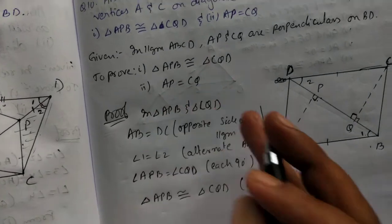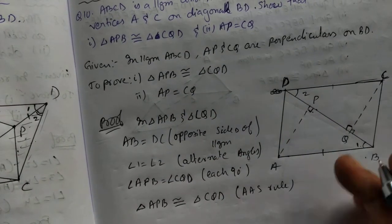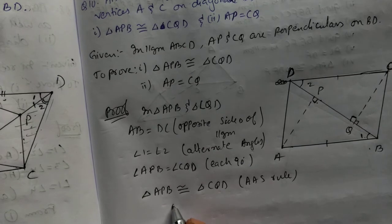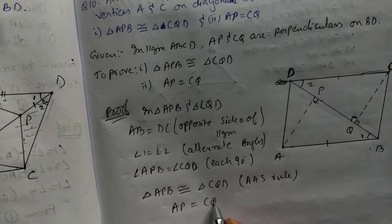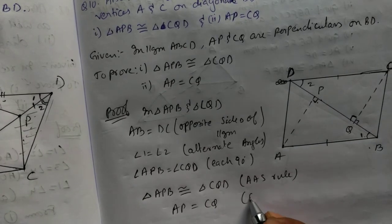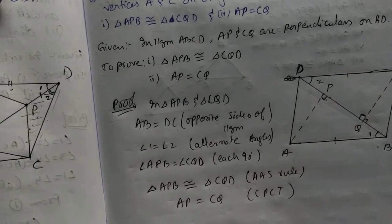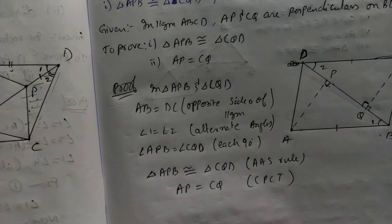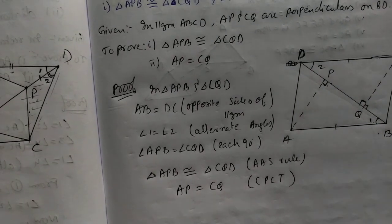If the triangle is congruent, automatically these two will be same. AP equal to CQ. Reason is CPCT — corresponding part of congruent triangle. Hence proved. You can pause the video to write the proof. Thank you.